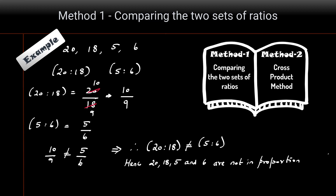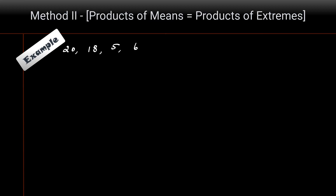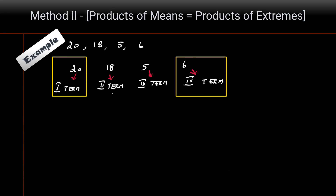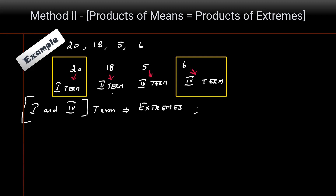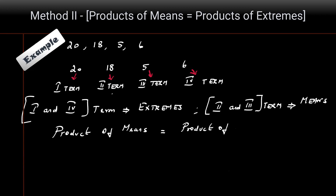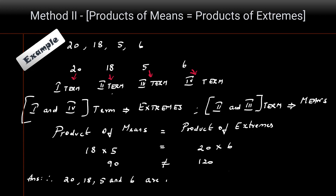Using method two — the cross product method — product of means equals product of extremes. With 20, 18, 5, and 6: the extremes (first and fourth terms) are 20 and 6; the means (second and third terms) are 18 and 5. Product of means: 18 × 5 = 90. Product of extremes: 20 × 6 = 120. Since 90 ≠ 120, the numbers 20, 18, 5, and 6 are not in proportion.